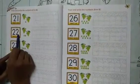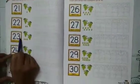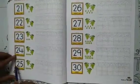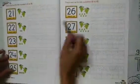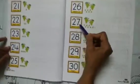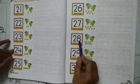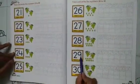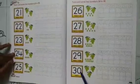21, 21, 22, 23, 23, 24, 24, 25, 25, 26, 26, 27, 27, 28, 28, 29, 29, 30, 30.